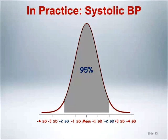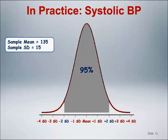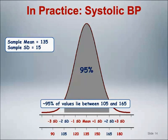So how do we use this information in practice? Let's assume we have measured systolic blood pressure on a sample of patients and calculated the sample mean and sample standard deviation to be 135 and 15, respectively. If we assume the distribution of blood pressures is approximately normal, we can infer that approximately 95% of the values lie between 105, which is two standard deviations or 30 points below the mean value of 135, and 165, which is two standard deviations or 30 points above the mean value of 135.